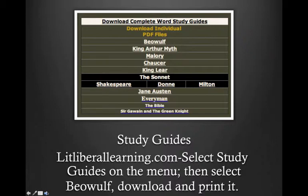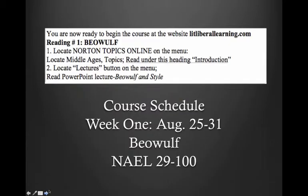Now minimize the eCampus homepage and go to litliberallearning.com. You're going to select your course, English 2322, then select study guides on the menu, and then select Beowulf. You want to download it and print it. Now go back to the study guide and you're ready to take a look at the course schedule. It says for week one, reading number one, Beowulf.